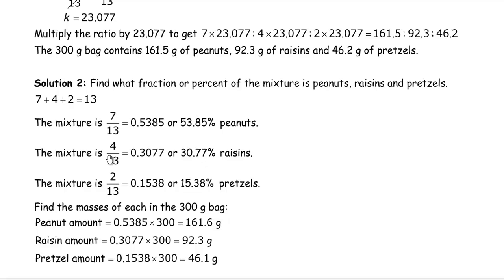The fraction that's raisins, the raisins was the second number, so 4 over 13, or 4 thirteenths, or 0.3077, or 30.77% is raisins. And the 2 was the pretzels, so 2 thirteenths is pretzels, 2 divided by 13 is 0.1538, or 15.38%.